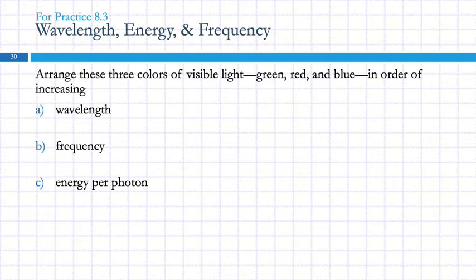Arrange these three colors of light—green, red, and blue—in order of increasing wavelength, frequency, and energy per photon. And I'm not going to give you the electromagnetic spectrum. I'm going to show you how to draw it yourself. I'm going to do it at the bottom because yesterday I did it at the top and there wasn't enough space. So what's the order of the colors in the rainbow? Red, orange, yellow, green, blue. Rudgy biff. Red, orange, yellow, green, blue, indigo, violet.